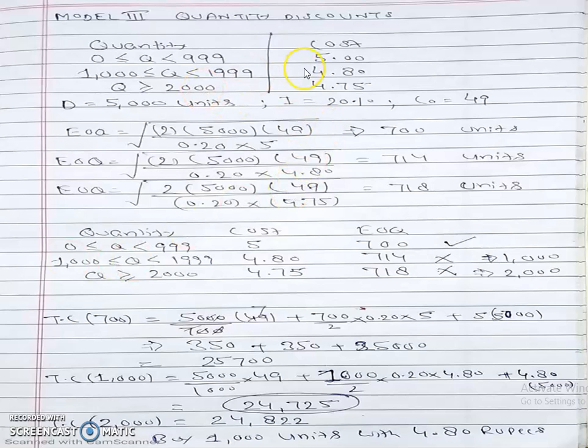How can we solve this type of problem? First, we calculate EOQ for all three unit costs. How do we calculate EOQ? EOQ equals the Wilson-Harris formula: square root of 2DC₀ divided by Cᴄ.